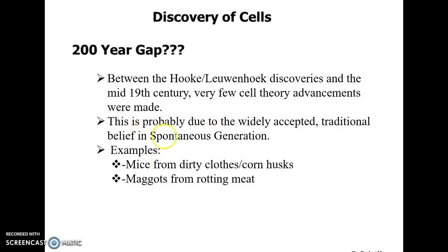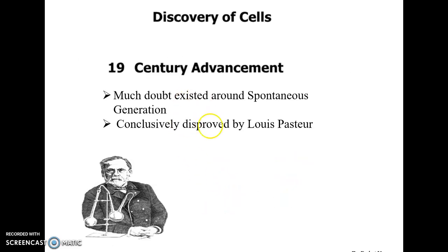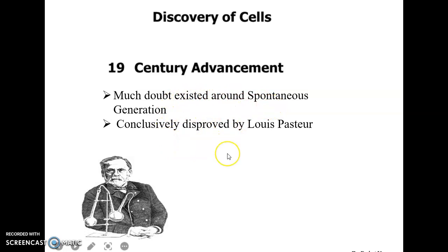Examples of spontaneous generation include the belief that mice always come from dirty cloths or corn husks, or that maggots come from rotting meat. Thanks to Louis Pasteur, much doubt was cast on spontaneous generation, and Pasteur conclusively disproved this theory.